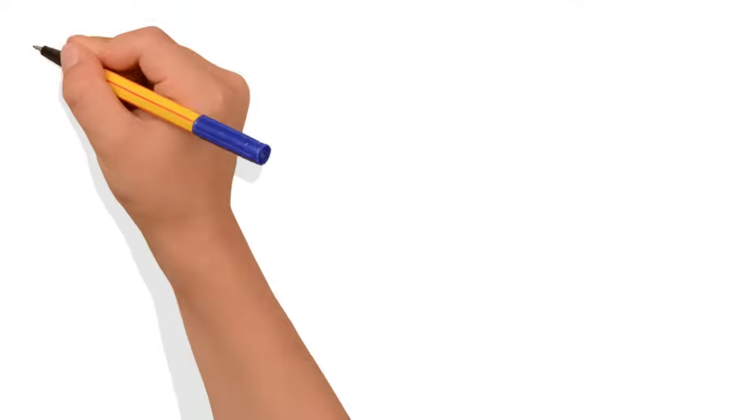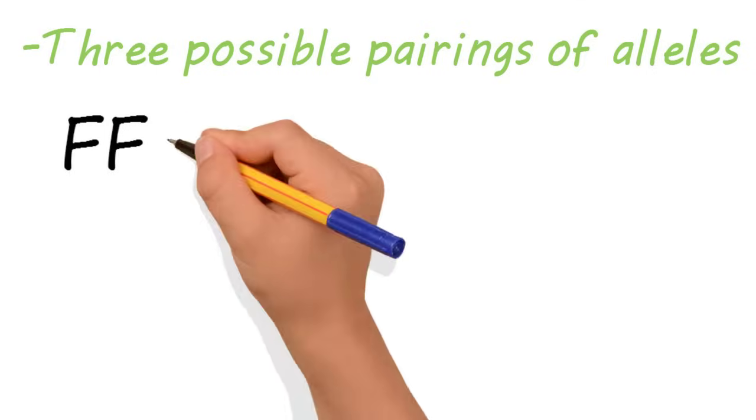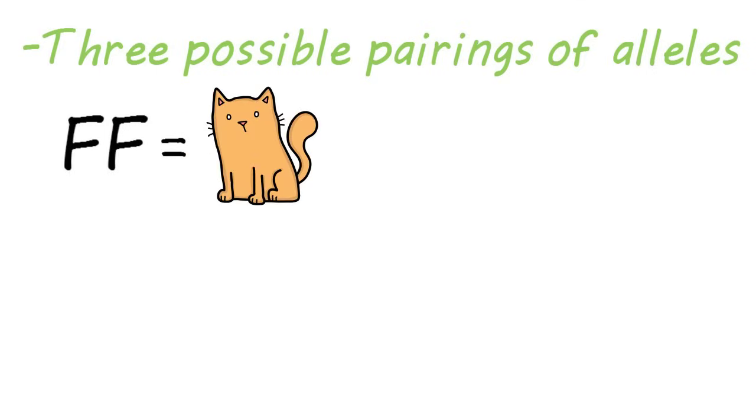There are three different pairings of these two alleles. You could have two dominant alleles, a big F and a big F, in which case the fur is orange. Or you could have two recessive alleles, a little f and a little f, in which case the fur is gray.